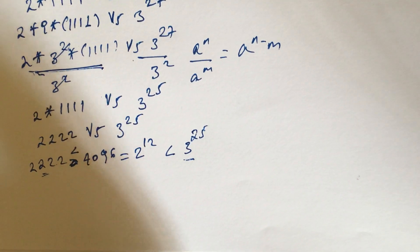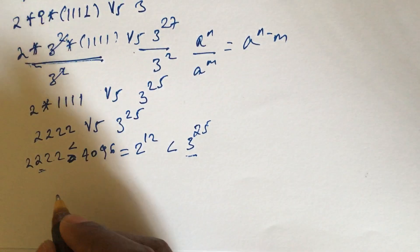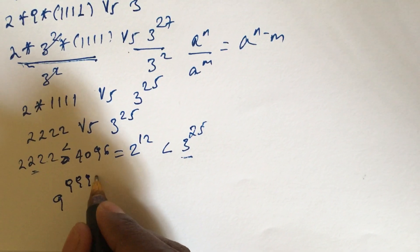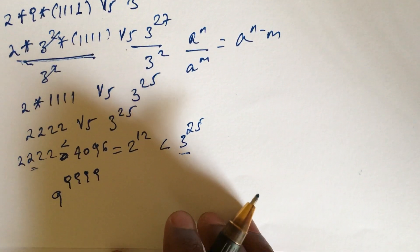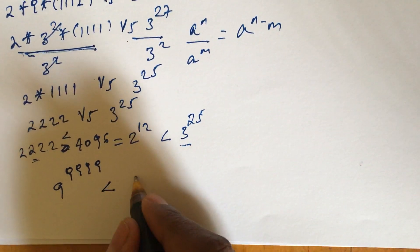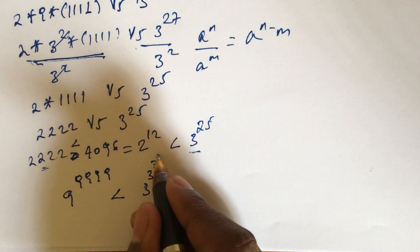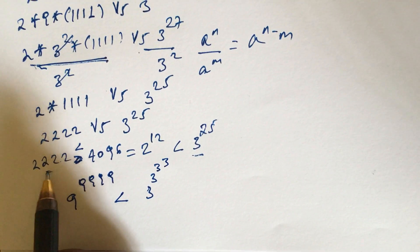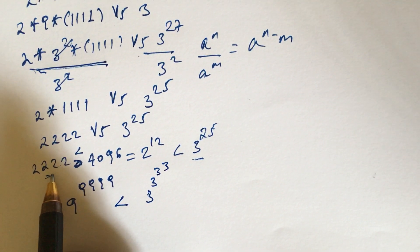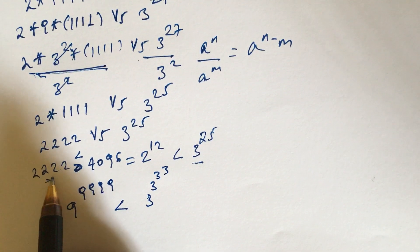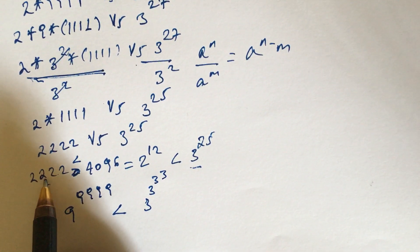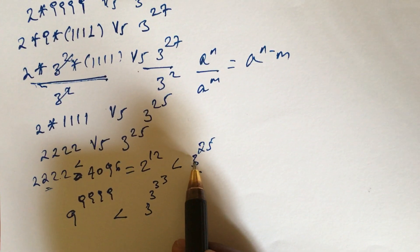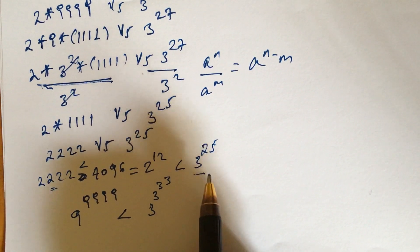Therefore, 9 to the power of 9^9^9 is less than 3 to the power of 3^3^3, because 2 to the power of 12 is less than 3 to the power of 25.